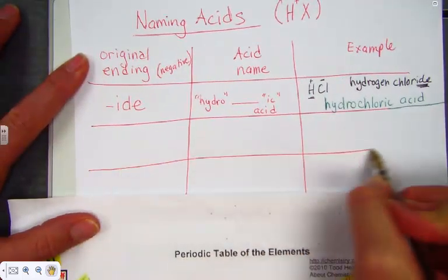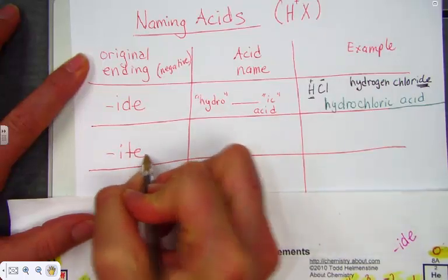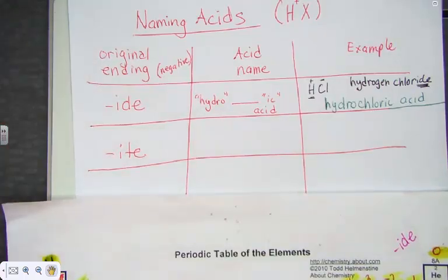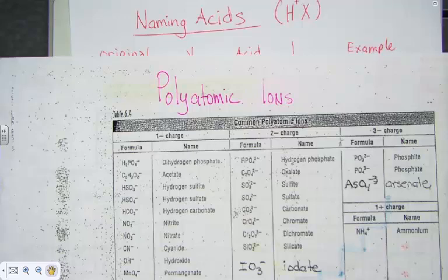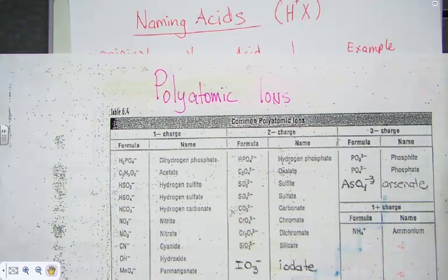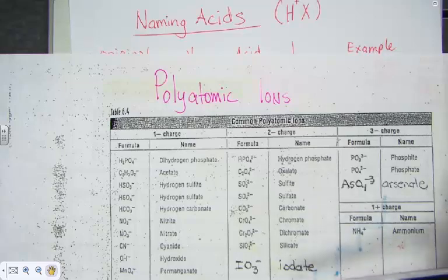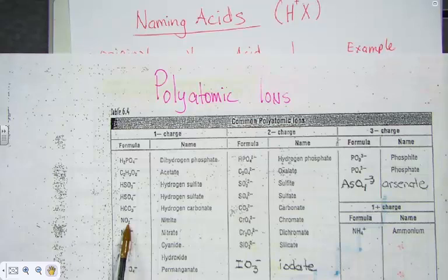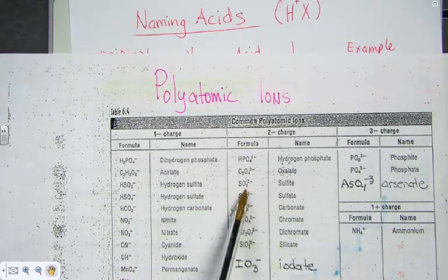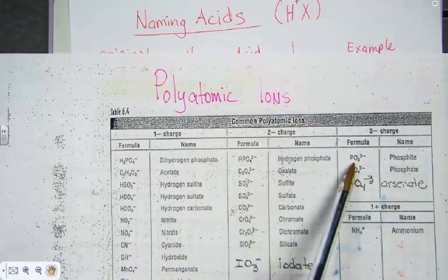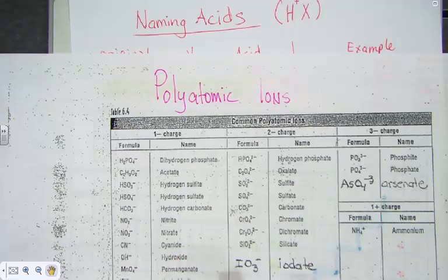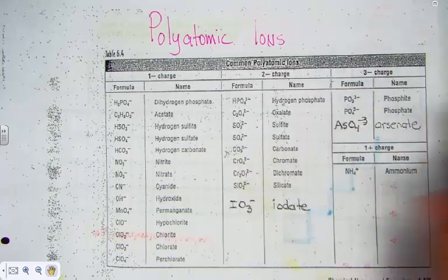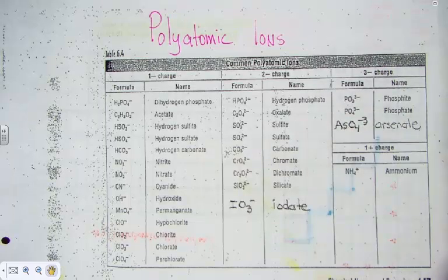Sometimes, the original endings end with -ite. If the original ending ended with -ite, we know it had to come from a polyatomic ion. Let's find an example from our polyatomic ion chart that ends with -ite. Here's one nitrite. Sulfite. Sulfite. Chlorite. There are many examples that we are seeing of polyatomic ions that end with -ite.